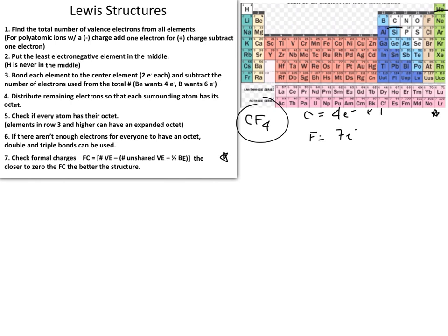We multiply the valence electrons by the total number of each atom type. For carbon: one carbon, so 4 × 1 = 4 electrons. For fluorine, the subscript is four, so 7 × 4 = 28 electrons.